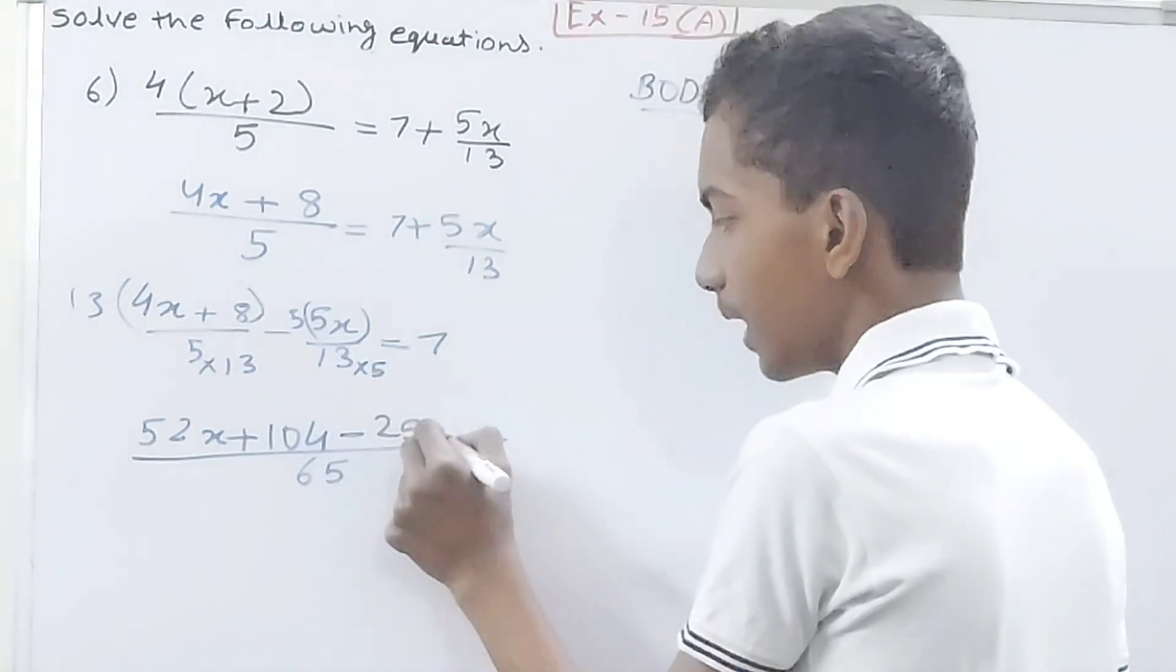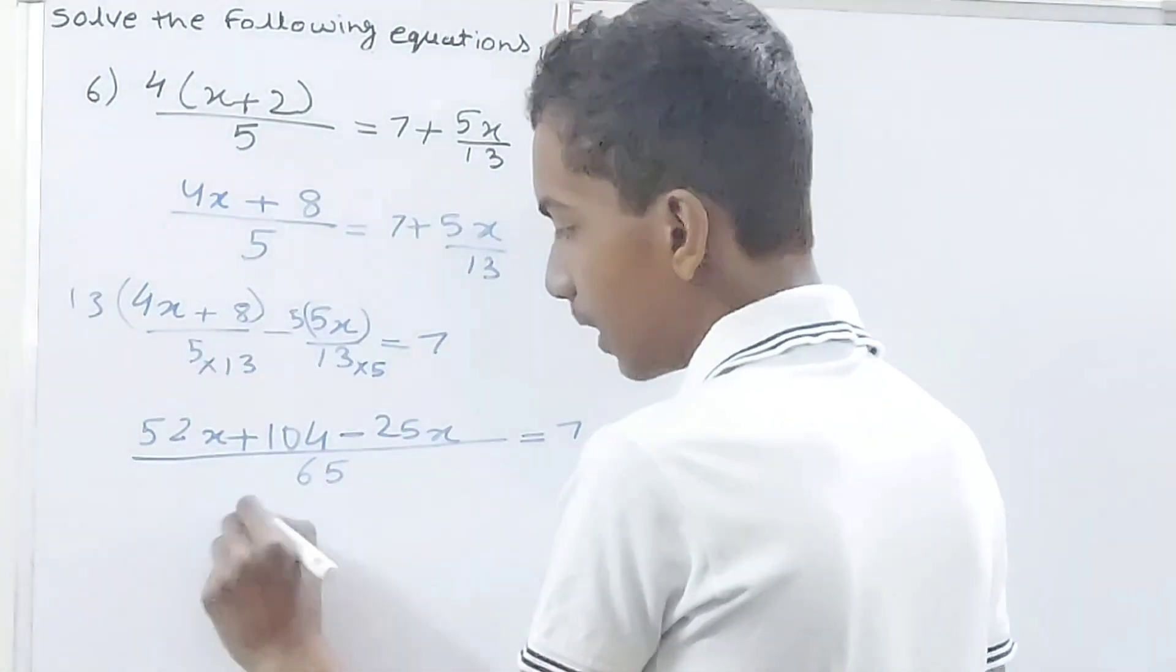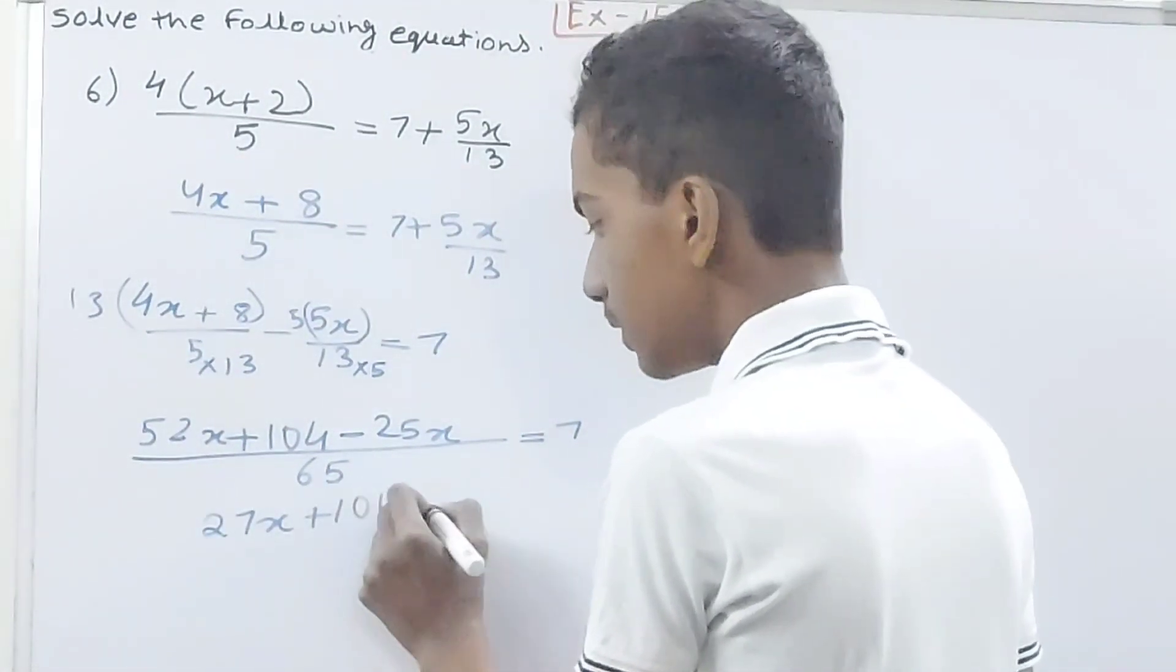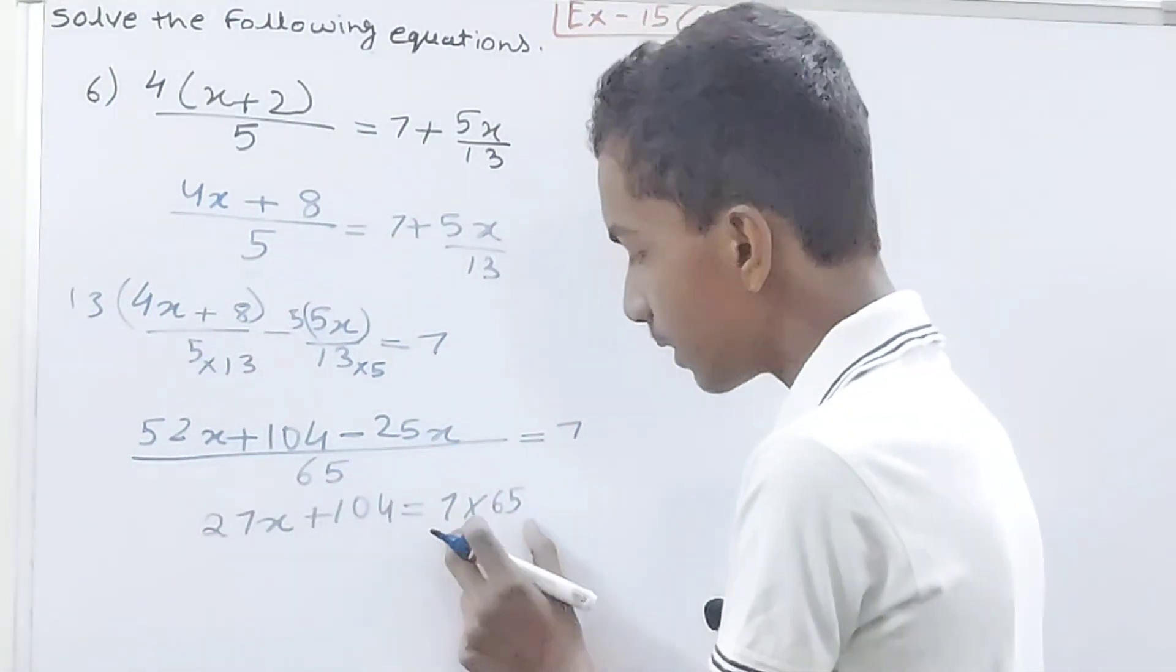See what you get here: 52x minus 25x, that is your 27x plus 104 is equal to 7 into 65. Upon 65 I've taken to this side, so 7 into 65.